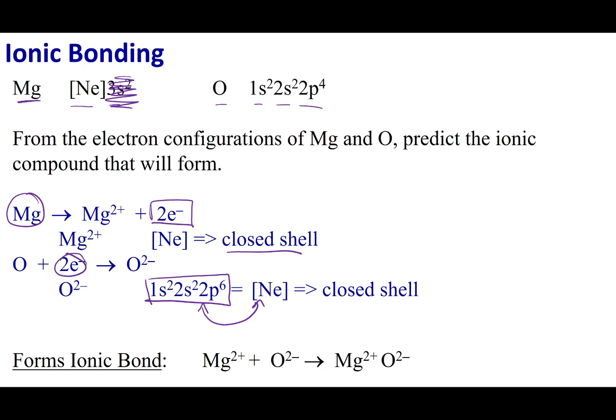Once I make those ions, I have a positive, I have a negative. Electrostatic charges bring this together to form an ionic bond.